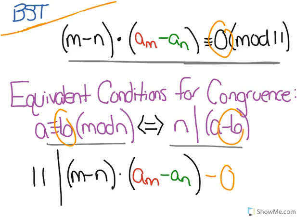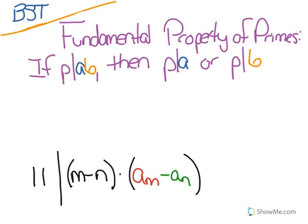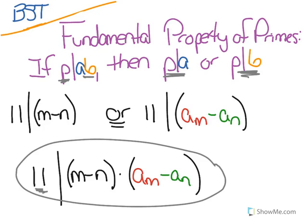Now we also need to remember that the fundamental property of primes tells us if a prime number P divides A times B, where A and B are both integers, then that prime number has to divide, or go into without any remainder, A or B. So then if we apply that to this statement down here, we see that because 11 is a prime number, 11 must divide M minus N, or divide A sub M minus A sub N. It has to divide either A or B in this pair of things that are being multiplied.